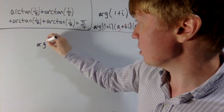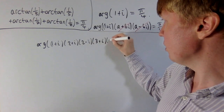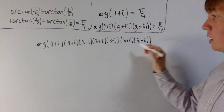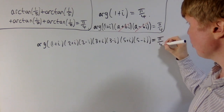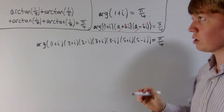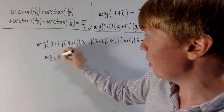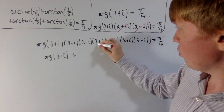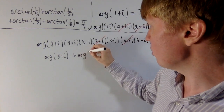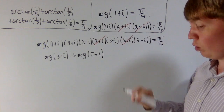What I did was take the argument of one plus i and multiply by (two plus i)(two minus i), also by (three plus i)(three minus i), and finally by (five plus i)(five minus i). These are all complex conjugate pairs, so their contributions to the argument cancel out and the final argument is still pi over four. The argument of three plus i gives our arctan of one-third piece, and five plus i gives arctan of one-fifth.